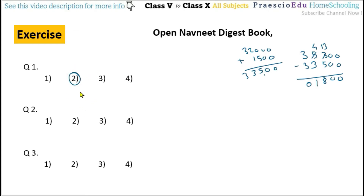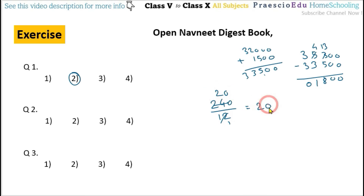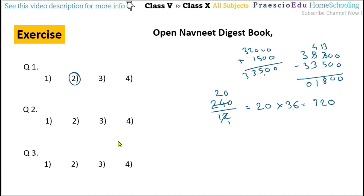Question number 2: 240 notebooks were purchased at rupees 300 per dozen and sold at a profit of rupees 36 per dozen. First, 240 divided by 12 equals 20 dozens. Since profit per dozen is rupees 36 and there are 20 dozens, total profit equals 20 multiplied by 36 equals rupees 720. This is given in option number 3.